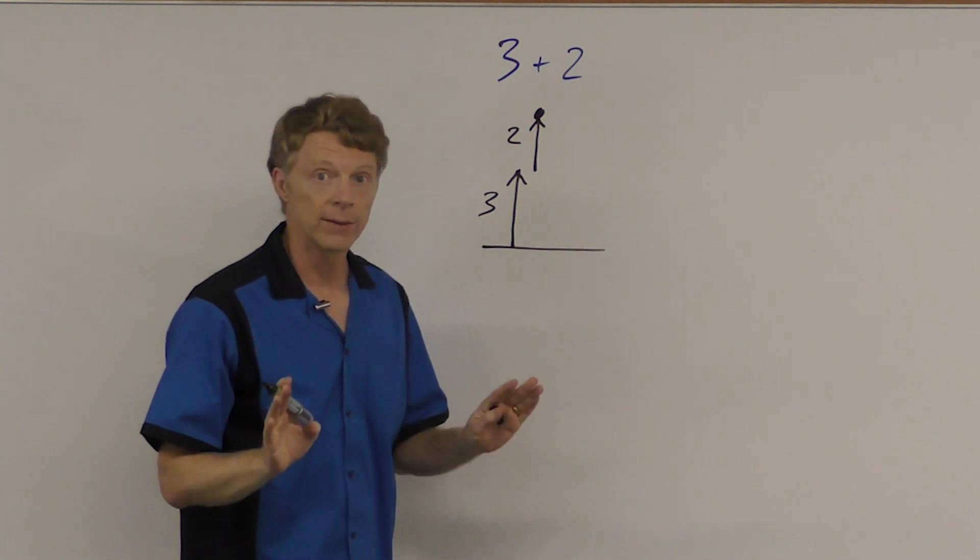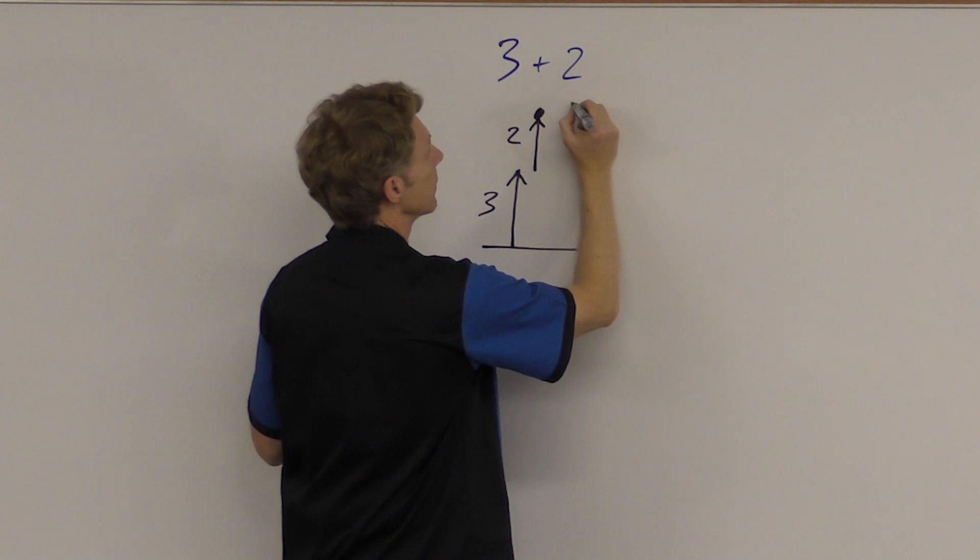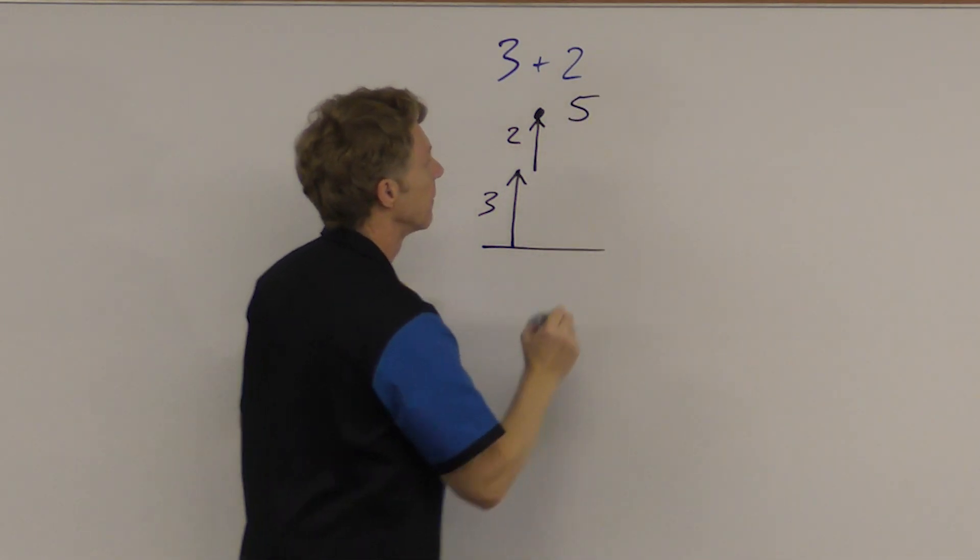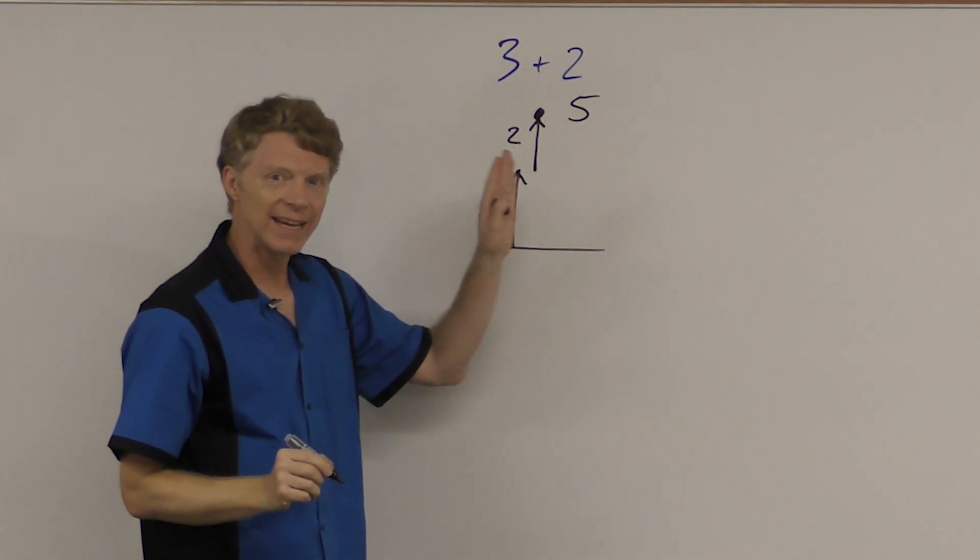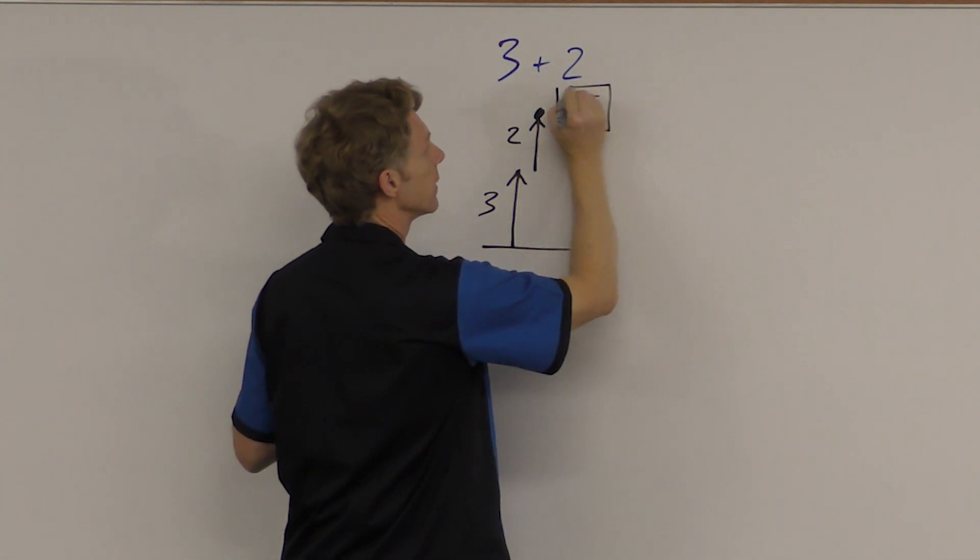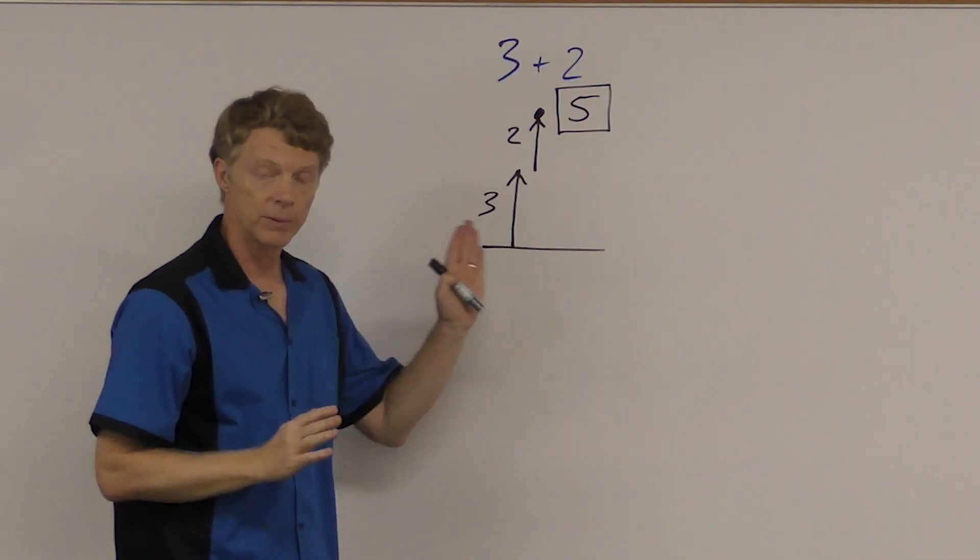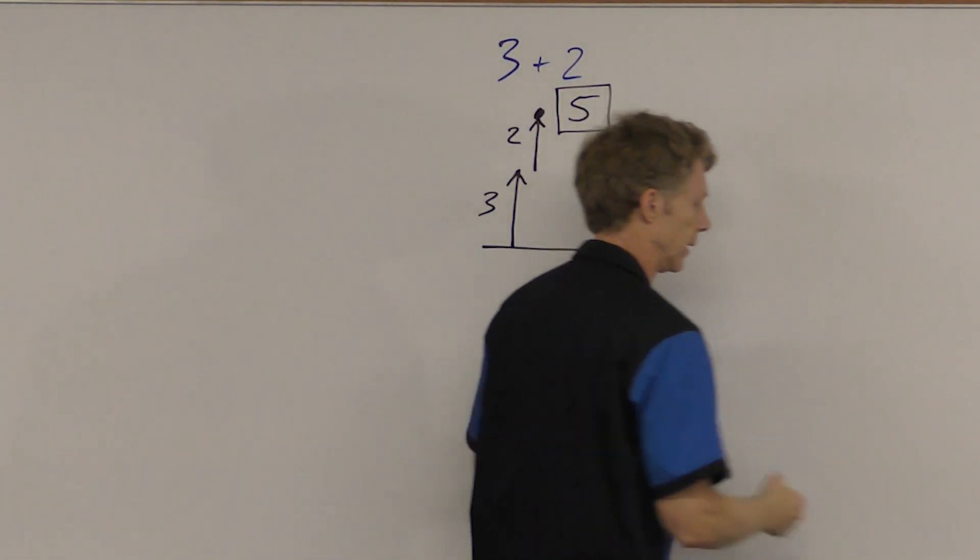But I also want to write what that answer is. So right next to it, I'm going to write a five. But again, notice how all the numbers look alike. I need to emphasize that this is the final answer. So I'm going to put a little box around it so that I can see what has happened. So now we've looked at three plus two equals five. Let's get slightly more complicated.